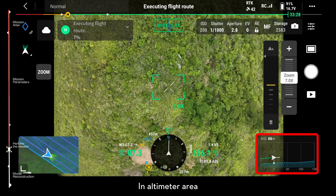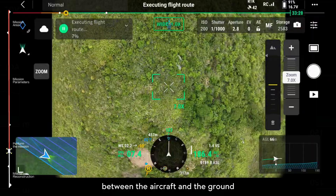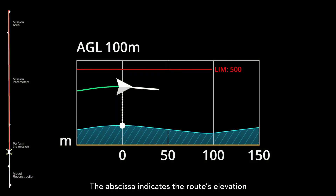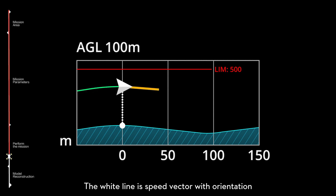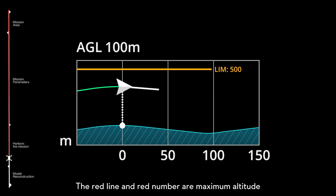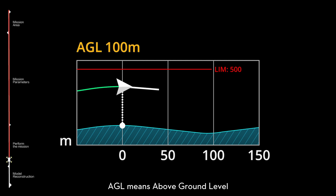In the altimeter area, you can check the real-time height difference between the aircraft and the ground. The abscissa indicates the route's elevation, and the ordinate means altitude. The blue part is terrain data, the green line is flight altitude, the white line is speed vector with orientation, and the red line and red number are maximum altitude. AGL means above ground level.